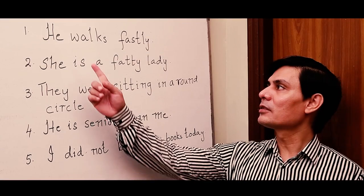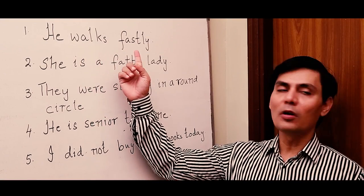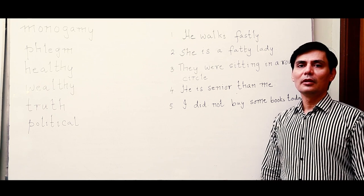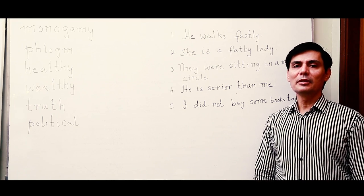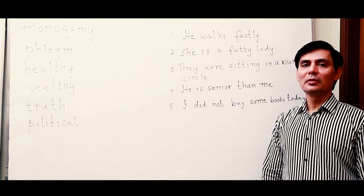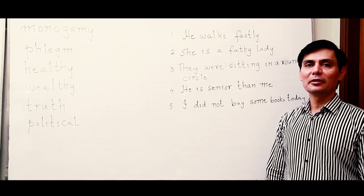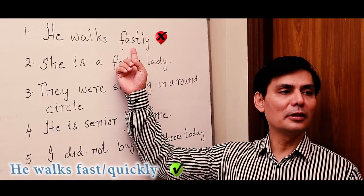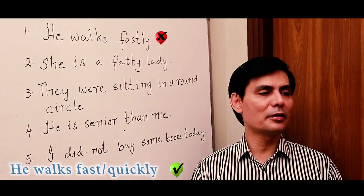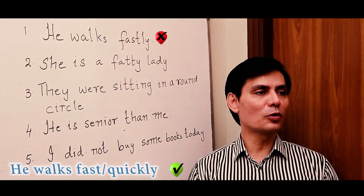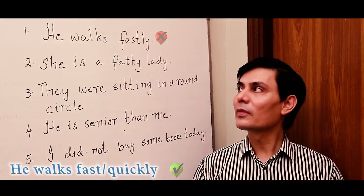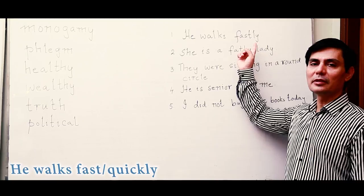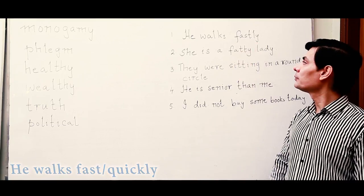Let's look at the first sentence: 'He walks fastly.' Some people say this, but it is incorrect — there is no word 'fastly.' You can say 'he walks fast' or 'he walks quickly.' So 'he walks fastly' is incorrect; the correct form is 'he walks fast.'